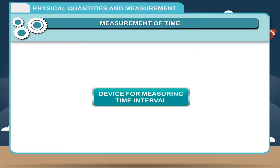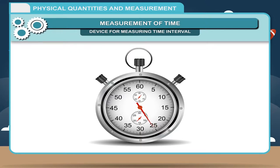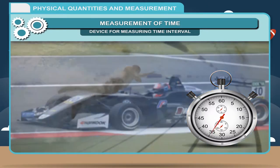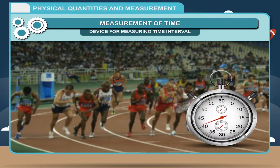The time taken by the bob to complete one oscillation is called its time period. The time interval of an event is measured with the help of a stop watch. We generally measure the minimum time in one second from our clock, but sometimes we require to measure one-hundredth part of a second. For this, we need a highly accurate electronic watch, which is used to measure time for athletic events.